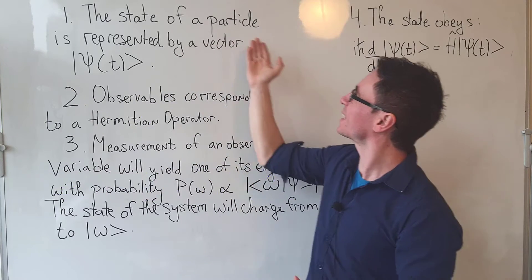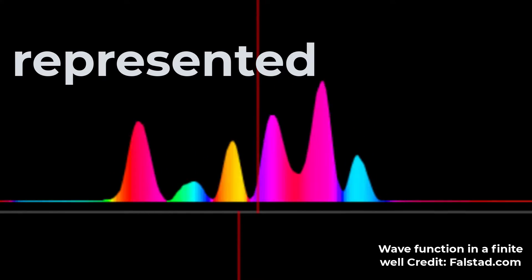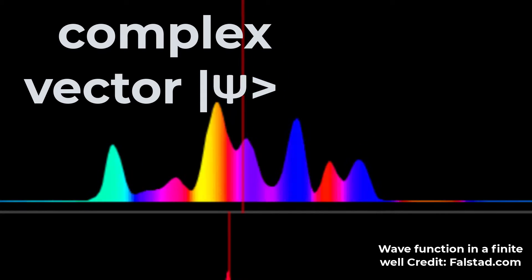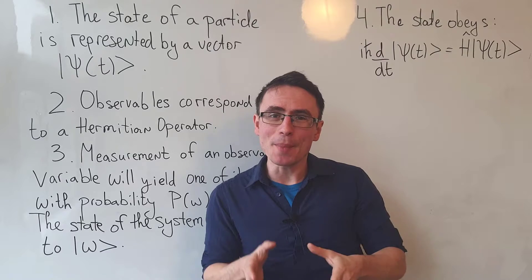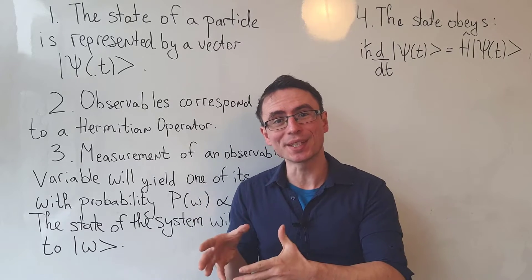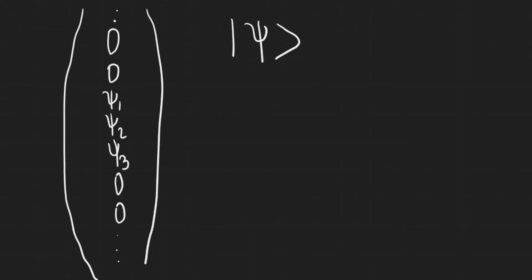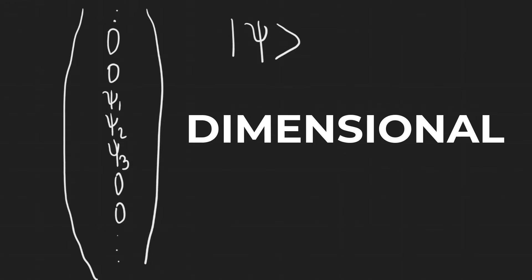First postulate of quantum mechanics: the state of a particle is represented by a complex vector in a Hilbert space. The dimension of the space can depend on the system itself, but is generally infinitely dimensional.